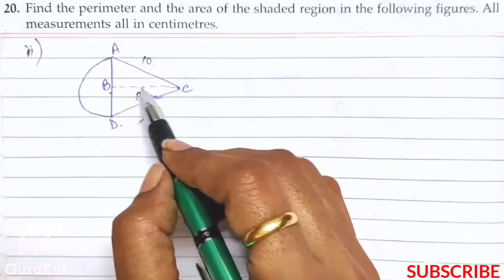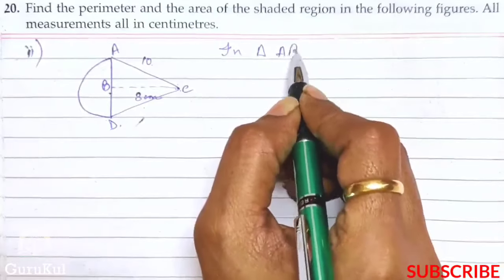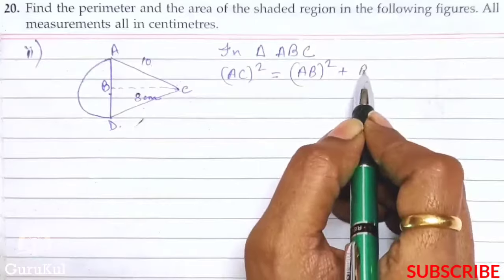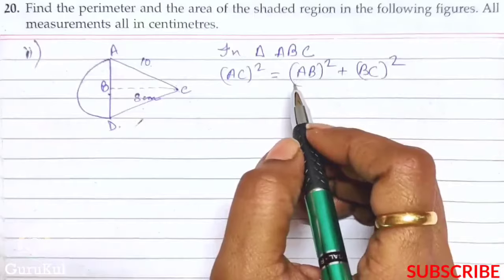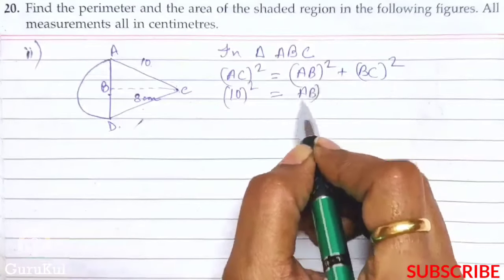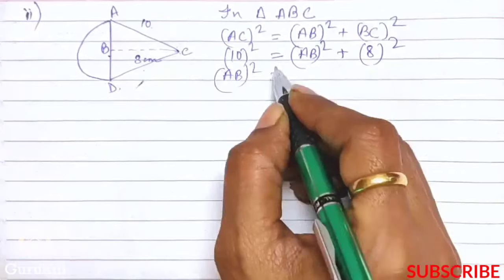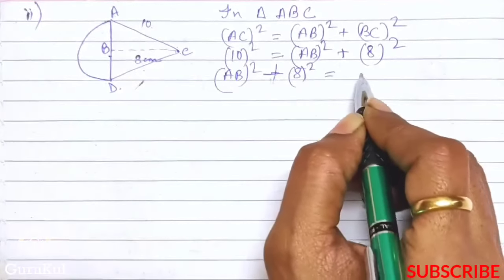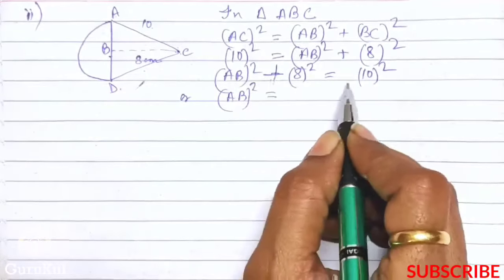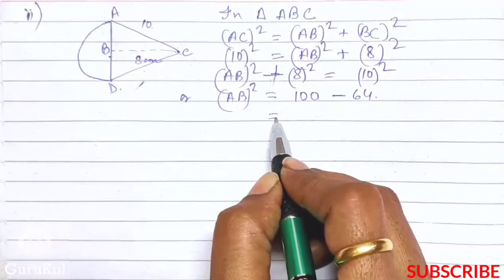The longest side is known and the height of the triangle is known, so we can find the base. In triangle ABC: AC whole square is equal to AB whole square plus BC whole square. AC is 10, BC is 8. Bringing the unknown to the left: AB whole square is equal to 100 minus 64, that gives us 36. Therefore AB is equal to square root of 36.